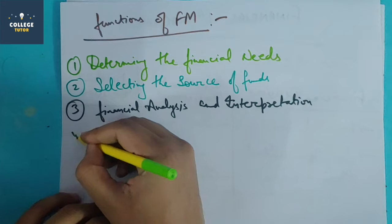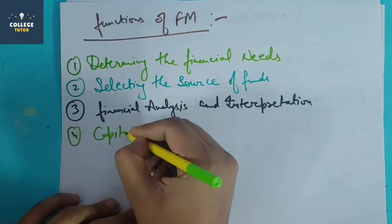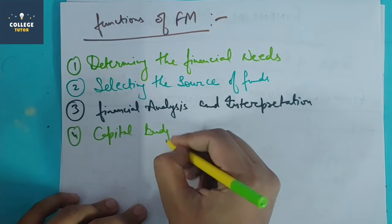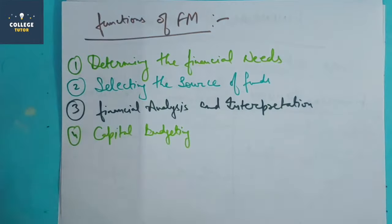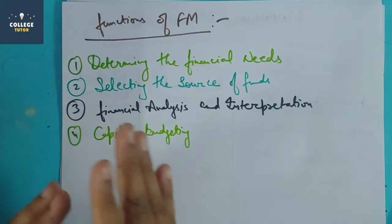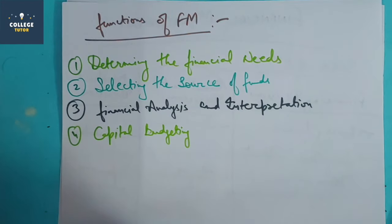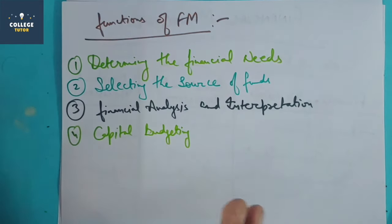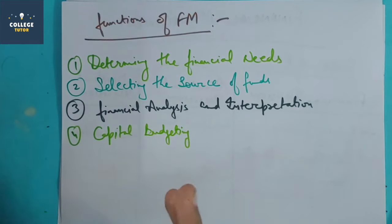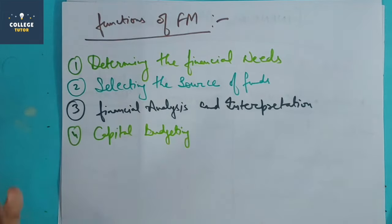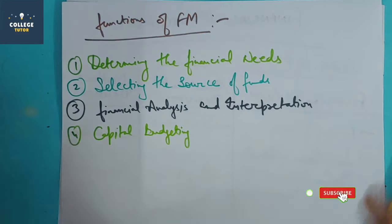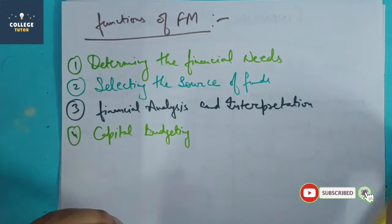After that, we have capital budgeting — deciding how much money to put in and when. The finance department allocates budgets across departments: how much money goes to sales, production, raw materials, promotions, and so on. The finance function decides where money will be used and how.